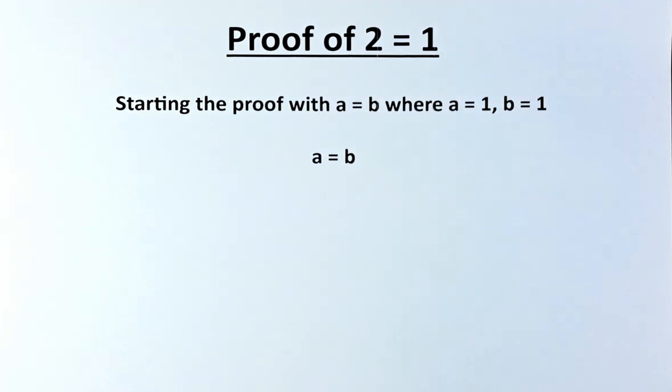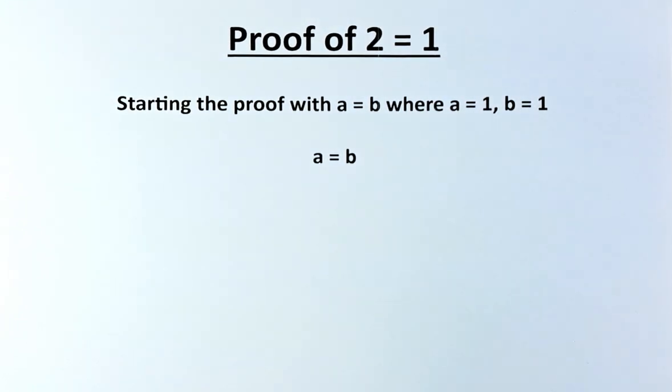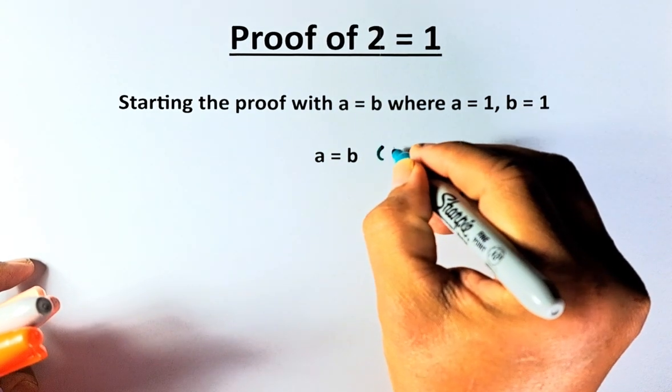So to prove that 2 equals to 1, what we're going to do, we're going to start with A equals to B, where A equals to 1 and B equals to 1, so we can say 1 equals to 1. So the first step we're going to do in this proof is that we are going to multiply by A on both sides of the equation.